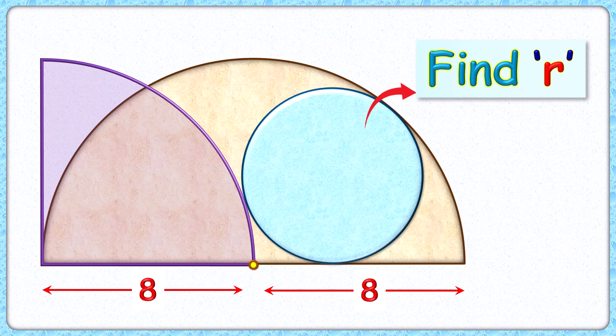Welcome everyone. This interesting question consists of a quadrant and a semicircle of radius 8 centimeters each. This point is the center of the semicircle. The exciting part is, with this limited data, we have to find the radius of this blue circle.